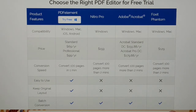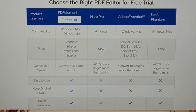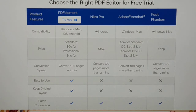When you compare the price, PDF Element is cheaper than several others. You can see the conversion speed — it converts 100 pages in one minute, which is much better speed compared to others. It's easy to use and keeps the original layout, which you cannot do in several other editors.